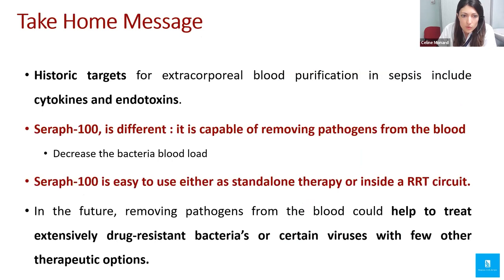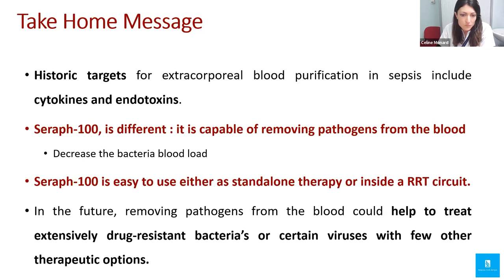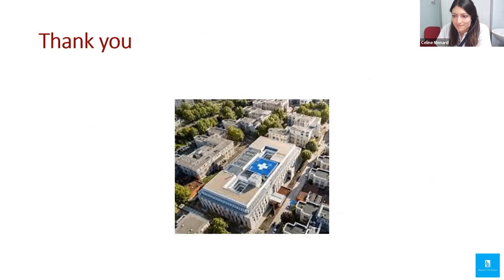In summary: historic targets for extracorporeal blood purification include cytokines and endotoxins, but Seraph 100 is different — it is capable of removing pathogens from the blood, decreasing bacterial load, helping control intravascular infection sources, and preventing activation of dysregulated immune response. It can be used as standalone therapy or inside a CRRT circuit. In the future, it may have a place in treating extensively drug-resistant bacteria. Thank you.